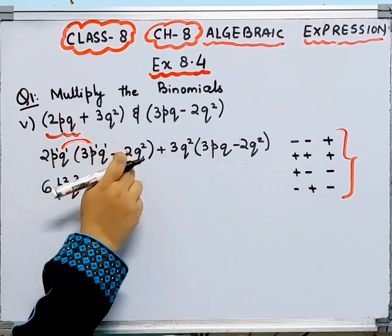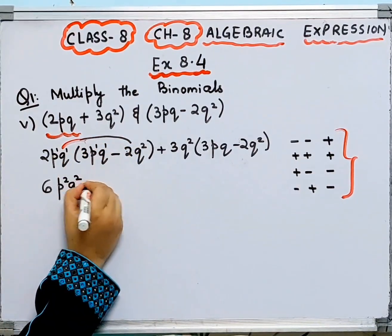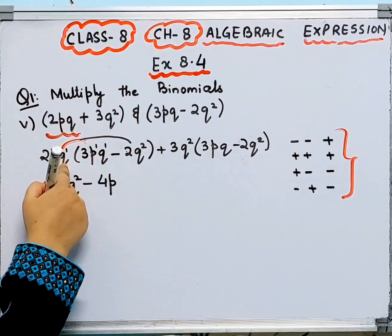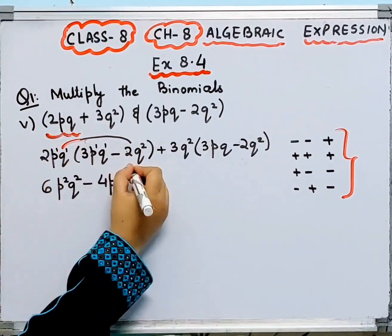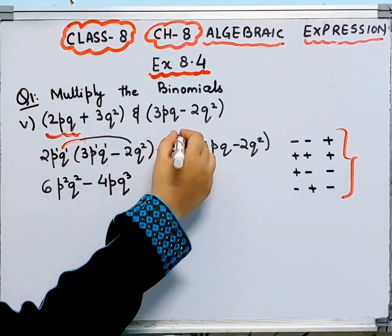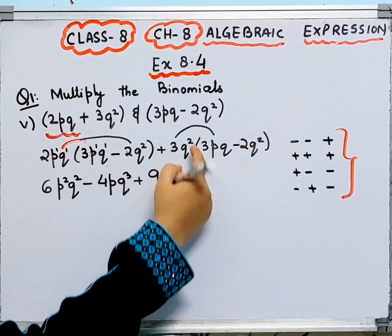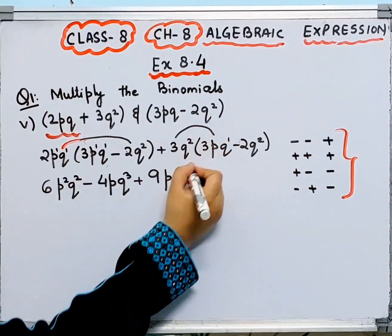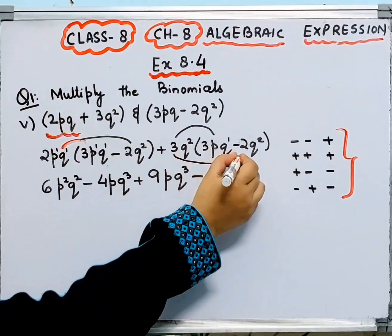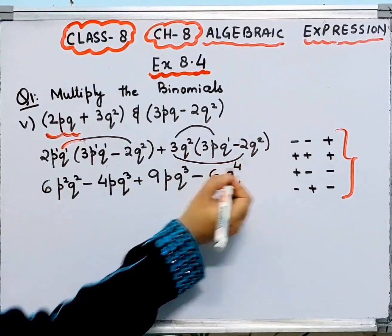Then 2pq times minus 2q squared: plus times minus is minus, 2 times 2 is 4, p to power 1, q has power 1 plus 2 equals 3, giving minus 4pq cubed. Then 3q squared times 3pq: 3 times 3 is 9, giving plus 9pq cubed. And 3q squared times minus 2q squared: minus, 2 times 3 is 6, q to the power 2 plus 2 equals 4, giving minus 6q to the power 4.